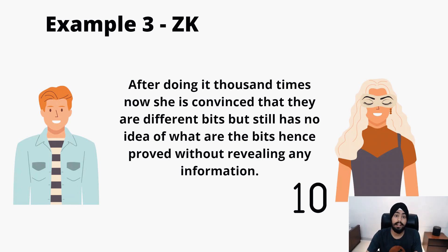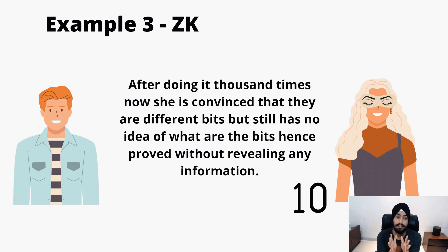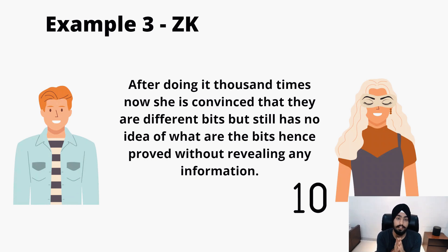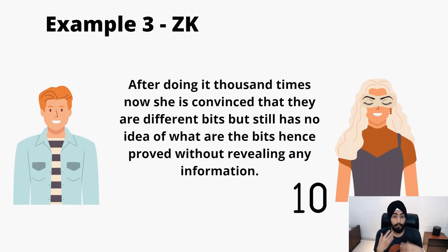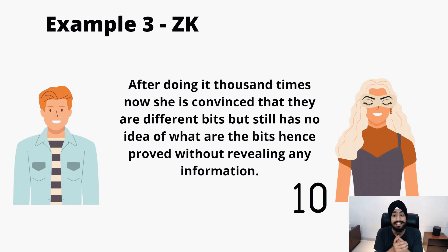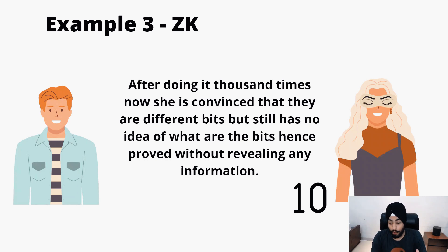So this is what zero knowledge is again — proving that you know something without conveying or revealing any other information. This actually solves the verification problem. We use computers for this because it takes a lot of computation — in this example she did it a thousand times, which is not possible for a human. These were simple examples of zero knowledge proofs.